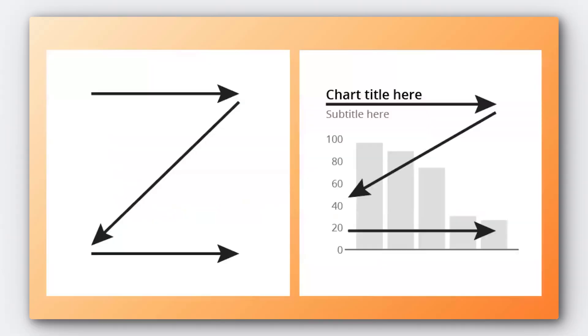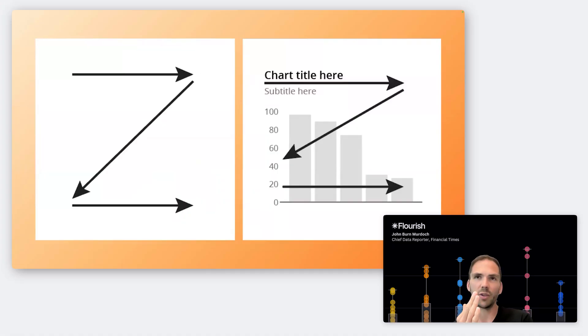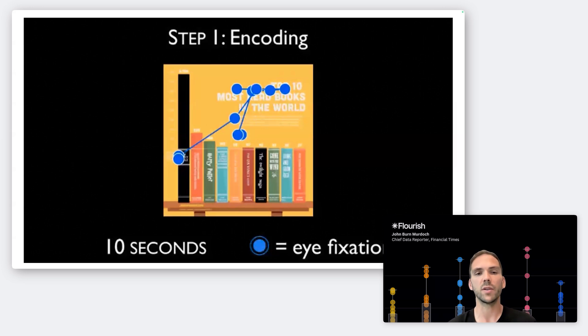Where is someone's attention going to move as they encounter this chart? They're going to start on the title, they're then going to move down and come across the actual plot area. When we're making charts, we focus an enormous amount on the actual plot — the colors, the shapes, the layout. But we really should be aware that people's attention is nonetheless going to be drawn to text first.